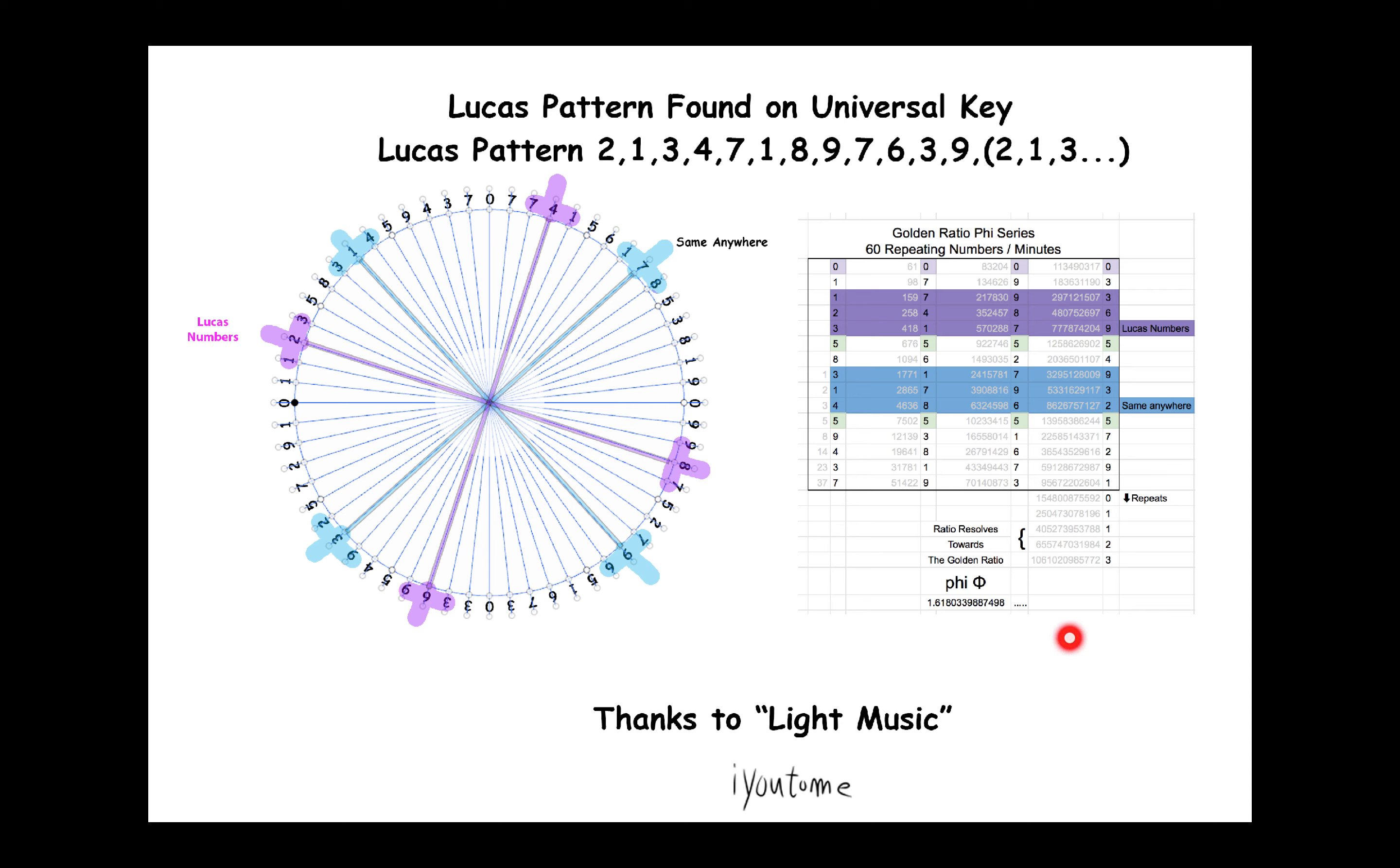Hi, thanks to Light Music. He asked that I check into the Lucas pattern and see how it fits. The Lucas pattern is 12 repeating numbers. You take 2 plus 1 is 3, 3 plus 1 is 4, 4 plus 3 is 7, 7 plus 4 is 11. We'll just keep the 1 and keep going.